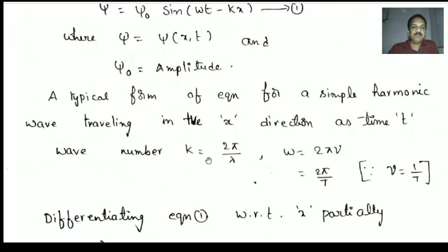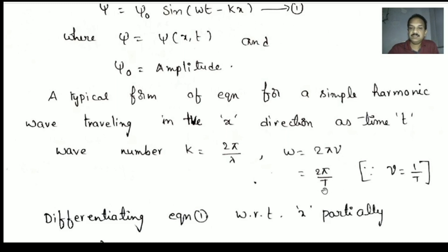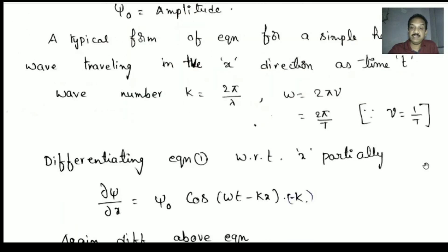The wave number k is equal to 2π/λ — the ratio of phase reference and path reference. The angular velocity omega is equal to 2πν, where nu means frequency, or 2π/T, where T means time period. Then ν = 1/T. These are the basic formulae.